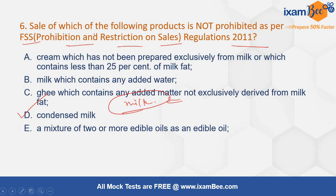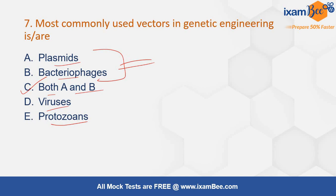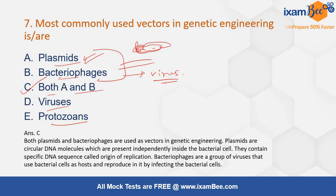The next question is: the most commonly used vectors in genetic engineering are? Options are plasmid, bacteriophages, both A and B, viruses, or protozoans. The correct answer is both A and B, as both plasmids and bacteriophages are used as vectors in genetic engineering. A plasmid is the extra-chromosomal DNA present in a bacterial cell, while bacteriophages are viruses that infect bacteria, kill them, and replicate inside them. These two are mainly used for genetic engineering purposes due to their fast replication rate.